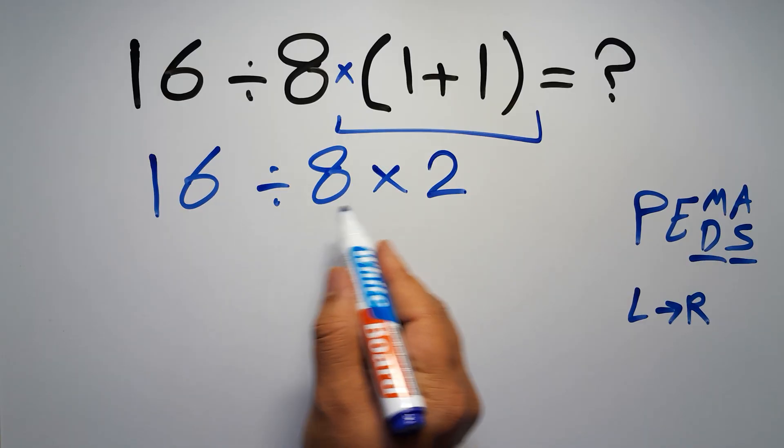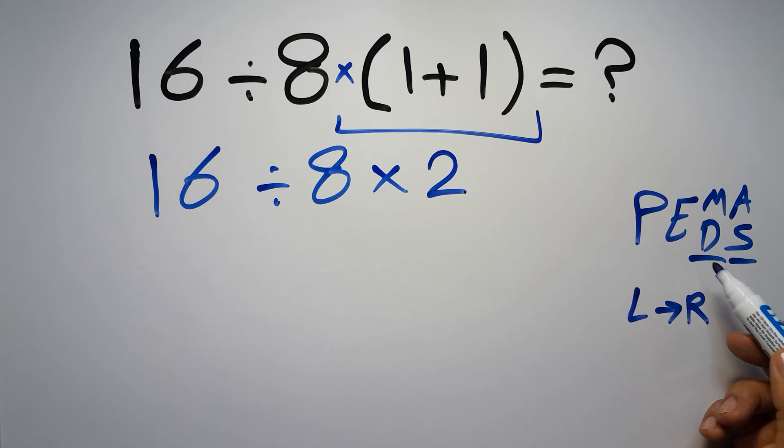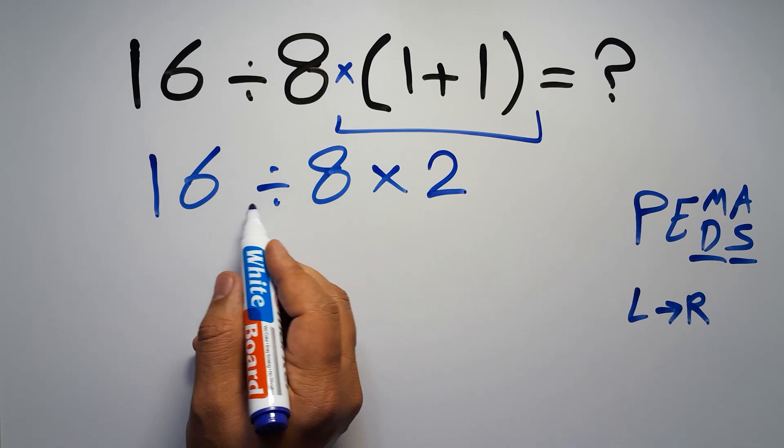Now we have 1 division and 1 multiplication. As I said, multiplication and division have equal priority, and we have to work from left to right. So here, first we have to do this division.